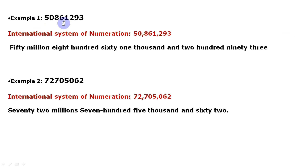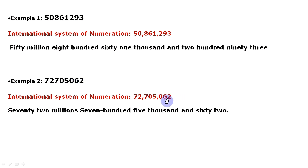Let's see some more examples. For the first number, I put the first comma after three digits from the right side, the second comma after the thousands period, and then the millions period has only two digits — no hundreds place — so I read: fifty million, eight hundred sixty one thousand, two hundred ninety three. For the second example, same steps: first comma after ones period, second comma after thousands period. I start reading from millions: seventy two million, seven hundred five thousand, sixty two.